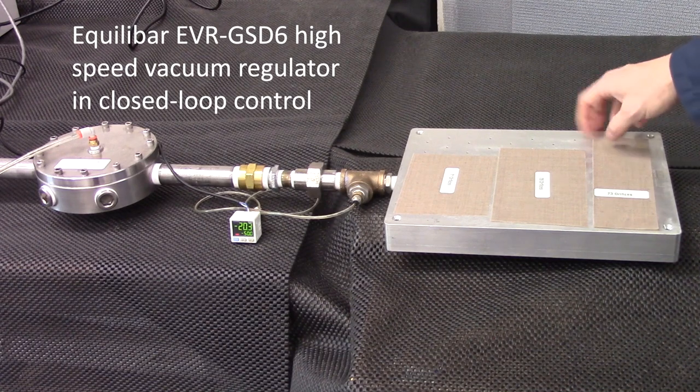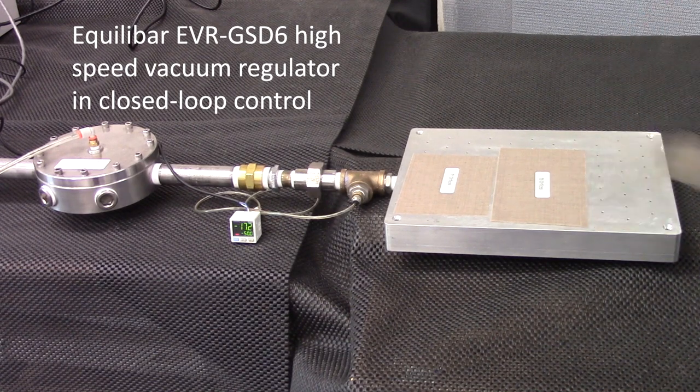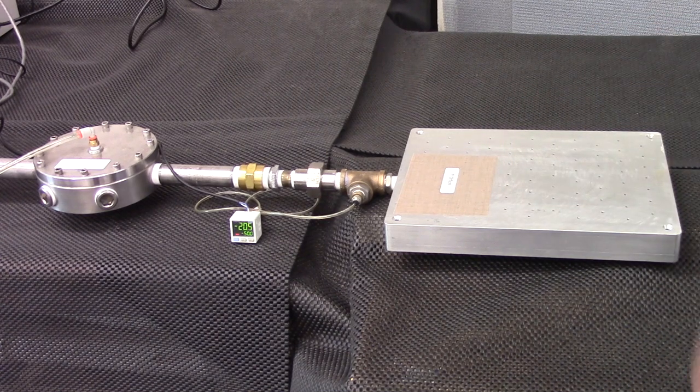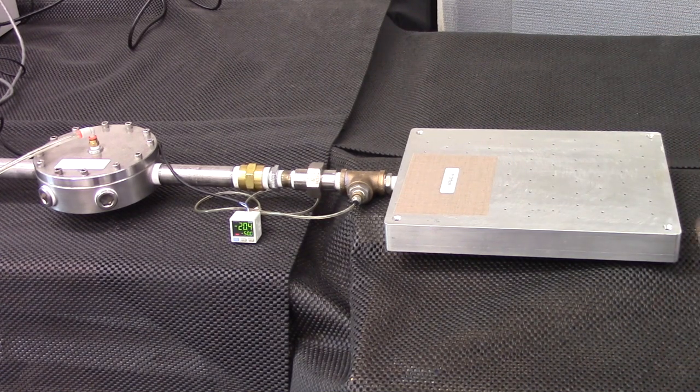Now let's do the opposite and remove them. So we'll remove this one, the system responded. Remove the next one, system responded. Now we have stable control.